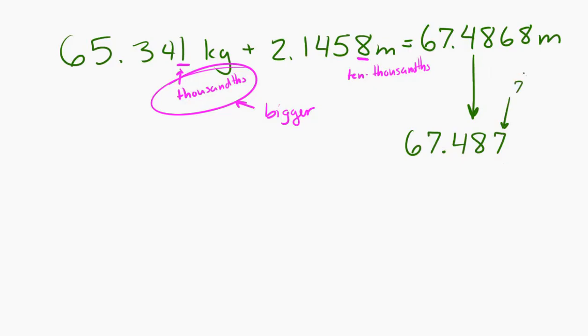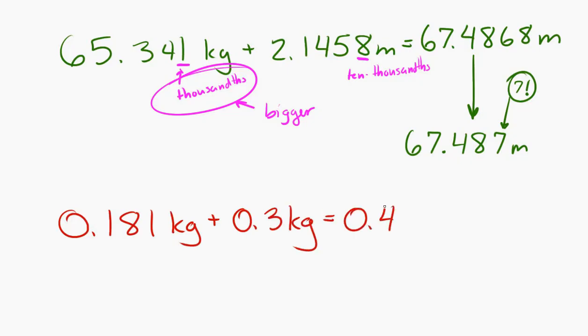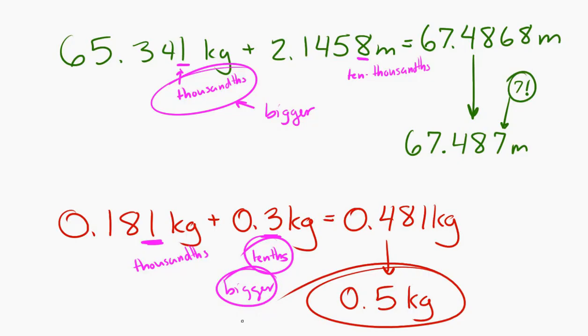And the last one, 0.181 kilograms plus 0.3 kilograms. So if we just add those together, it's 0.481 kilograms. But look, significant decimal place down to the thousandths, and then down to just the tenths. So our answer can only go down to the tenths, which is, if we round, 0.5 kilograms. And notice that I rounded there. Actually, in those last two, I rounded to the decimal place in the answer.